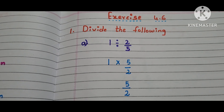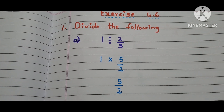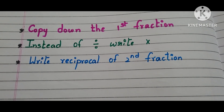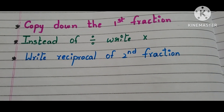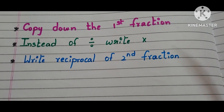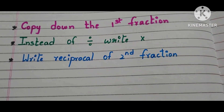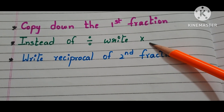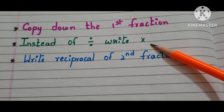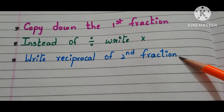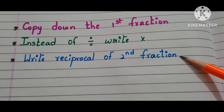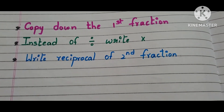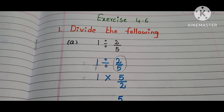First question is: divide the following. We have 3 steps to divide 2 fractions. First step is copy down the first fraction. Second, instead of the division symbol, write the multiplication symbol. And the third is write down the reciprocal of the second fraction and solve. Now, let us move to the question.